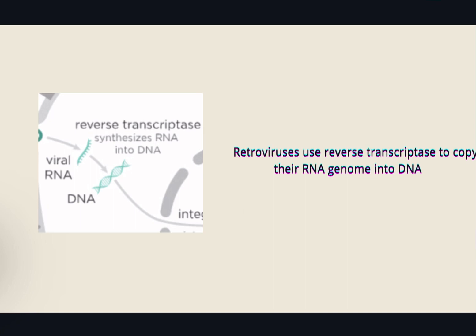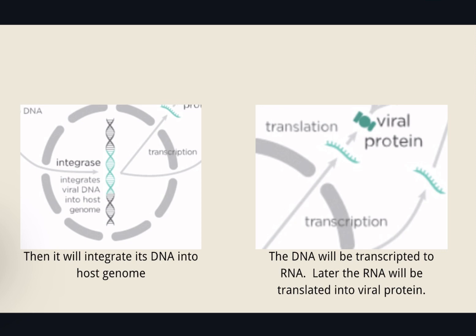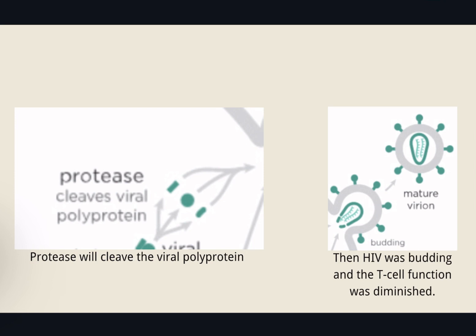Retroviruses use reverse transcriptase to copy their RNA genome into DNA. Then they integrate their DNA into the host genome. The DNA is transcribed to RNA, and later the RNA is translated into viral protein. A protease cleaves the viral polyprotein. Then HIV buds out and T cell function is diminished.